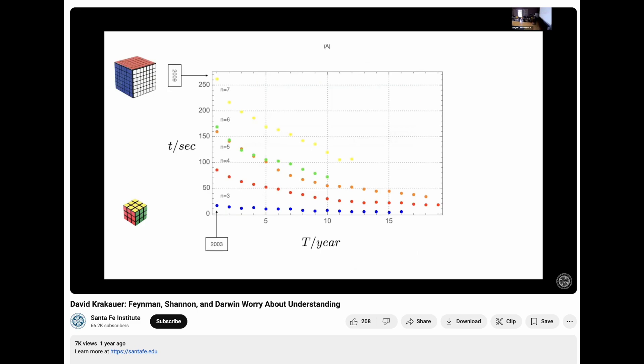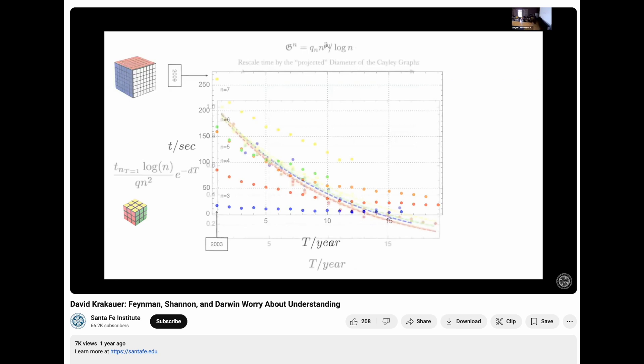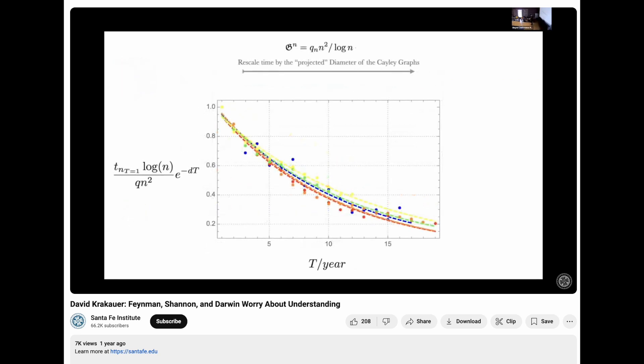is you can say, look, they all look rather similar, these curves. And I'm going to rescale them by the diameter of the Cayley graph. And they all collapse into one universal exponential.